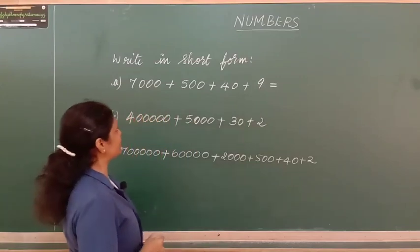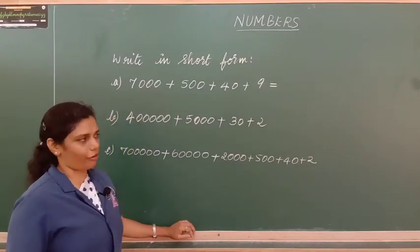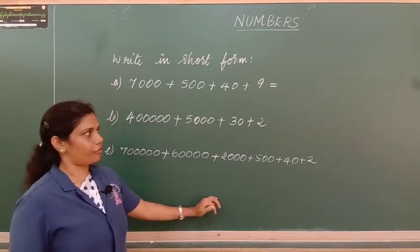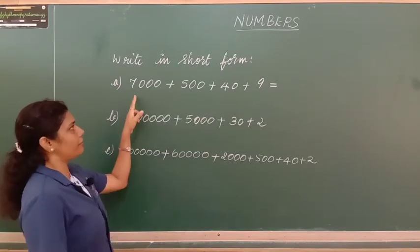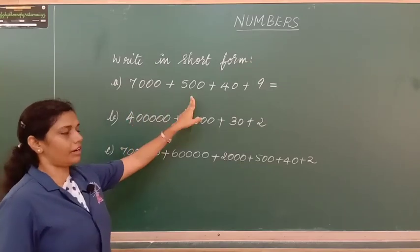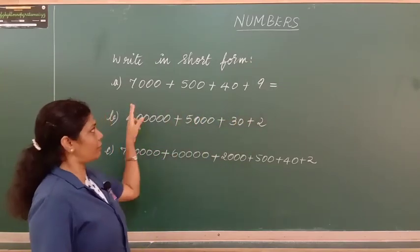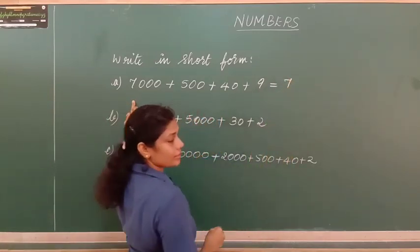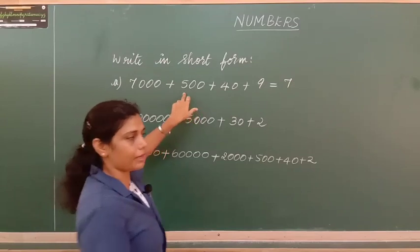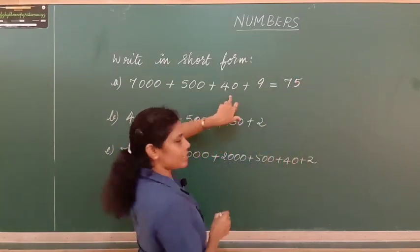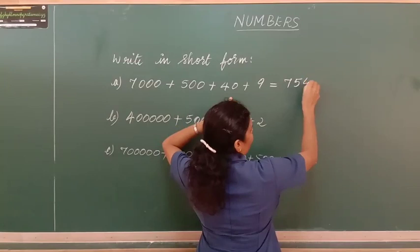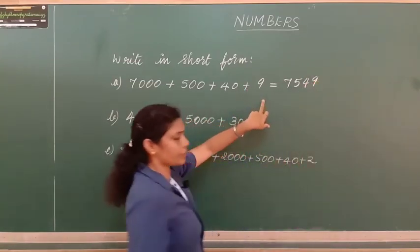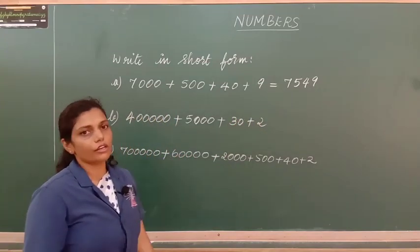Now the next problem is write in short form — the expanded form is given and we have to write it in short form. In the first problem we have 7,000 + 500 + 40 + 9. We write 7 in the thousands place, 5 in hundreds, 4 in tens, and 9 in ones. So it is 7,549.